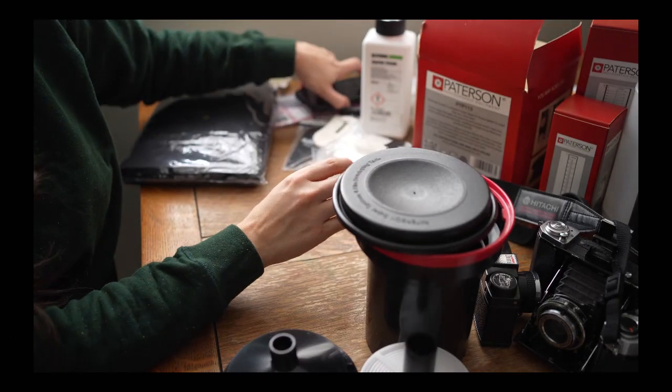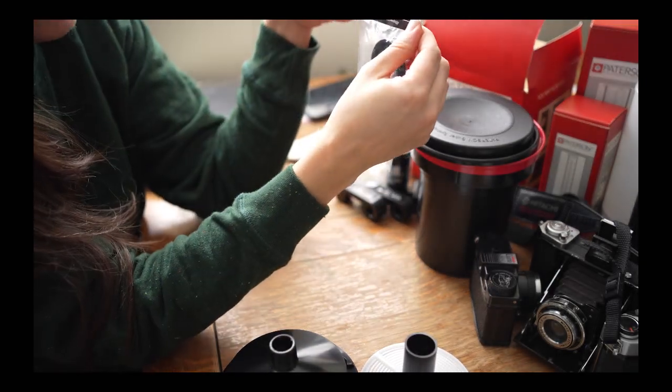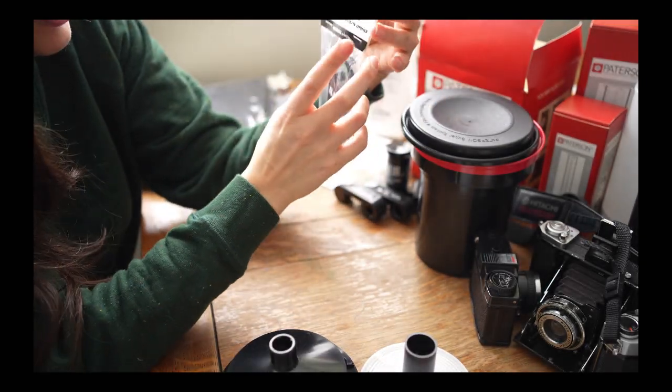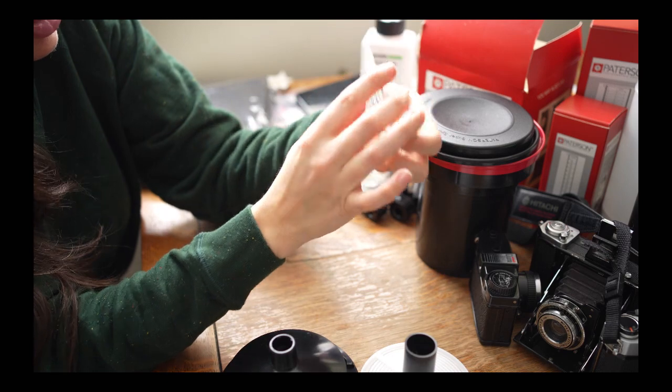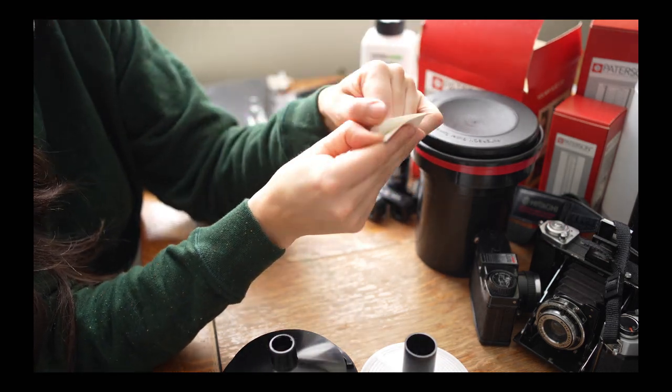The other items that you need inside of the changing tank are this film opener. Apparently it's basically a bottle opener, so I don't really need to spend however much money I spent on that, but I did buy one anyway just in case I had trouble with the film.